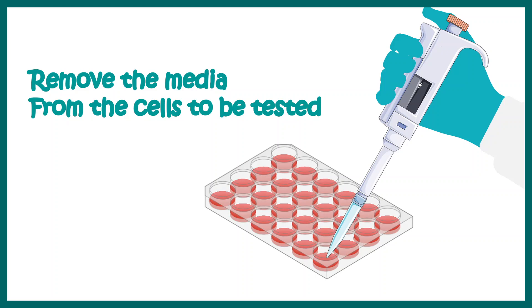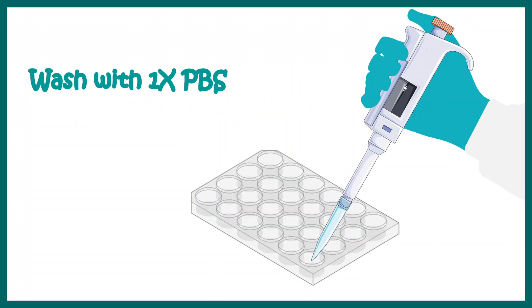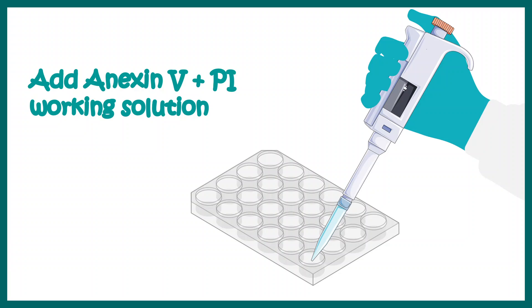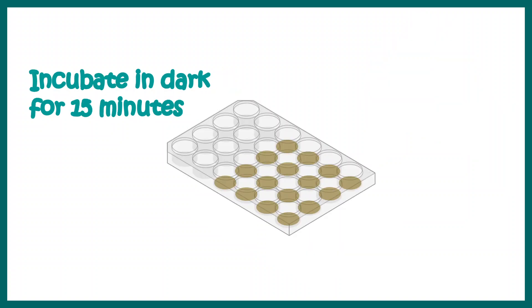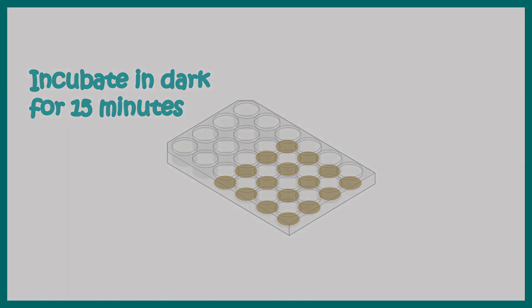First of all, we need to remove the cell culture media from the cells that need to be tested. Then we wash with 1x PBS and add the Annexin-5 and PI working mixture. We incubate this solution for 15 minutes in the dark so that binding can take place.